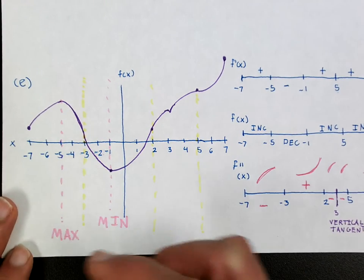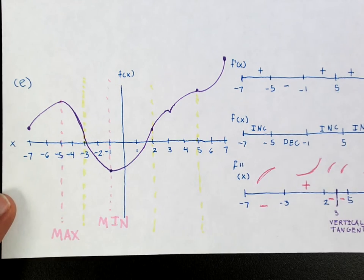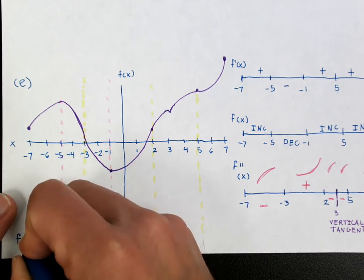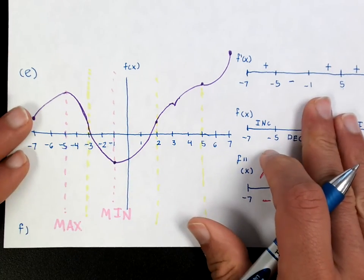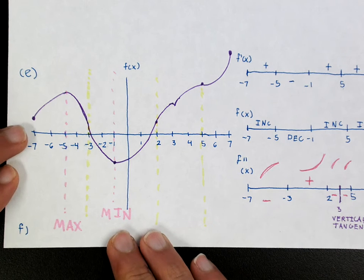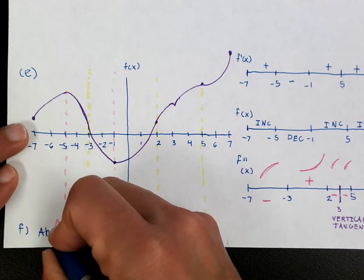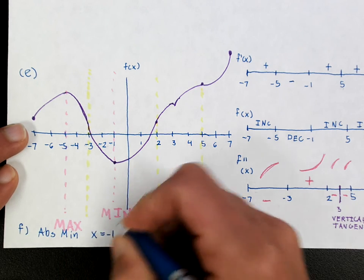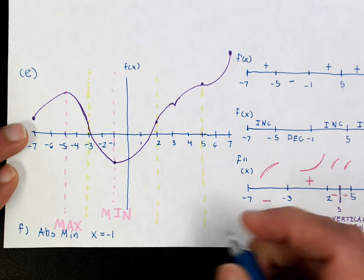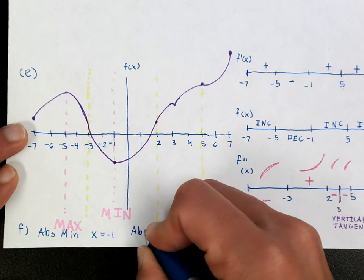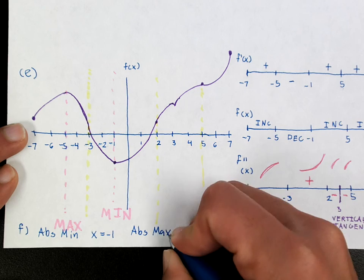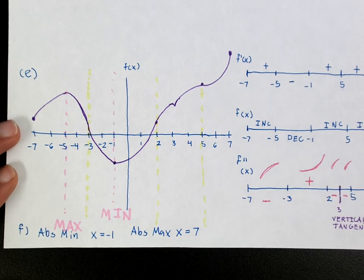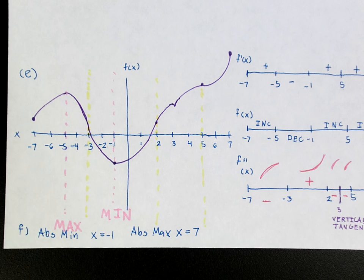Now finally on part F that I didn't do the last time. They're asking me to determine the absolute extrema. And it depends according to the way you drew the graph. But for me, my absolute minimum is going to be located at x is equal to negative 1. That is the lowest point I have here. And my absolute maximum is at x is equal to 7. Because that's the highest point that I have. So now hopefully that helped. Hopefully that's a little more clear.